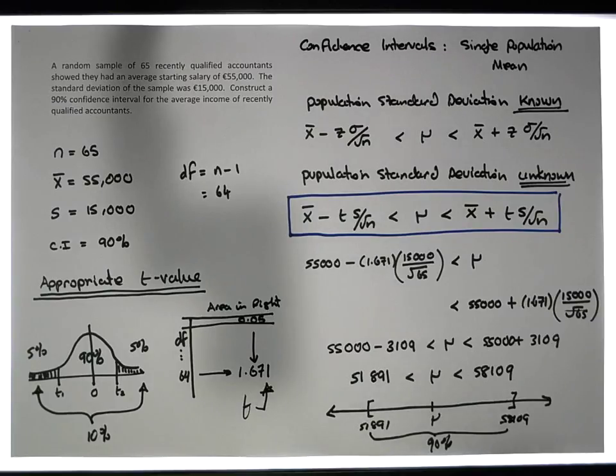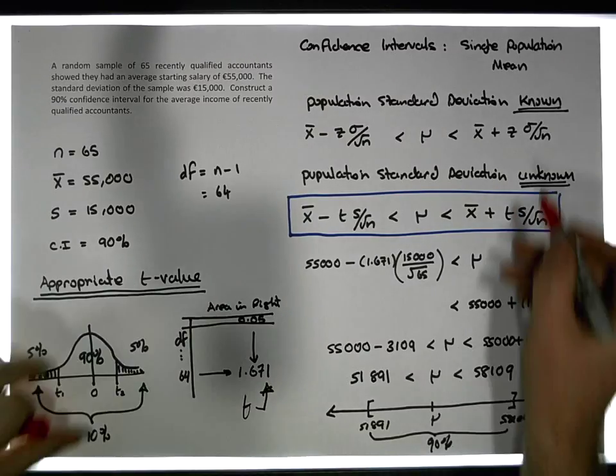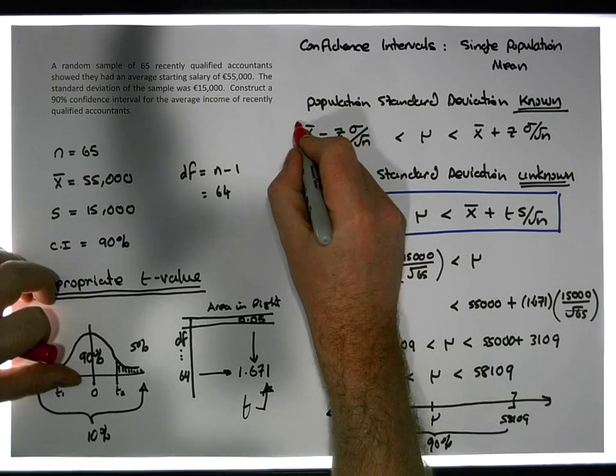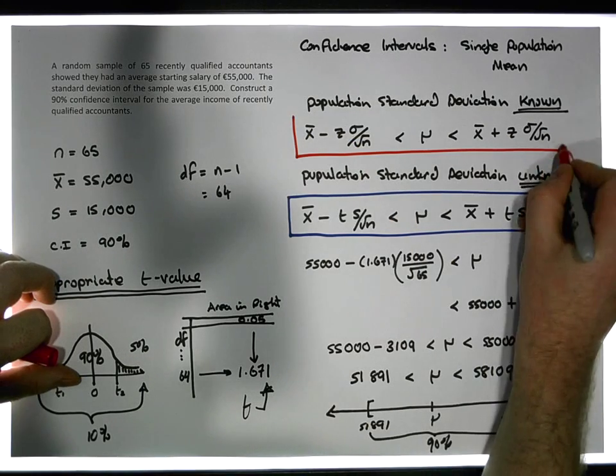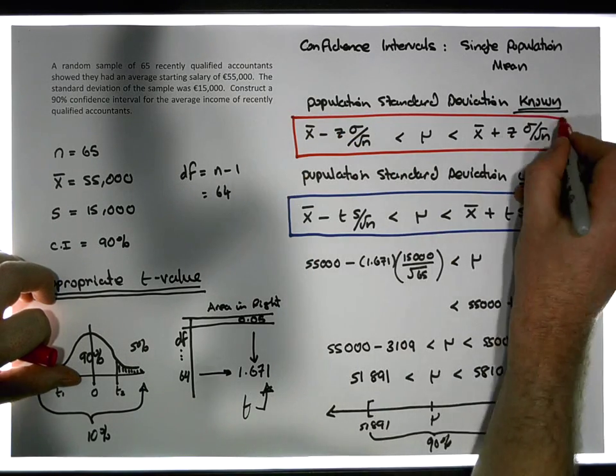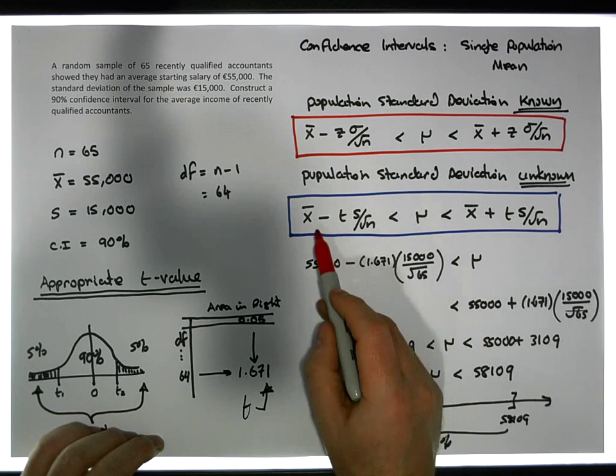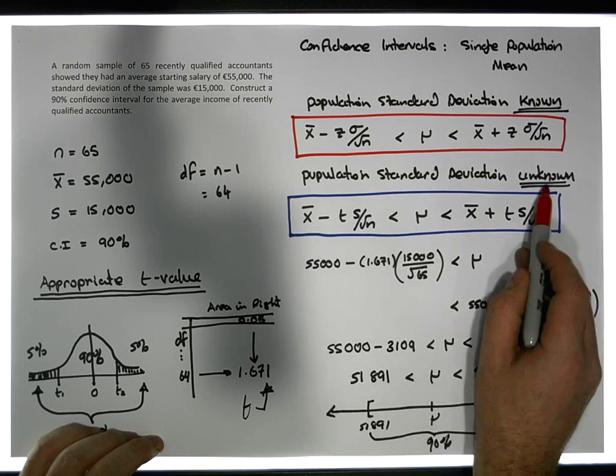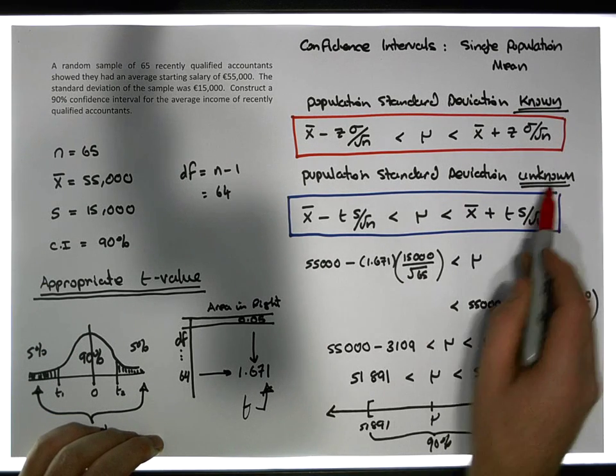That's how we calculate confidence intervals. The key thing to keep in mind is that we have two formulas: the first formula is where we know the population standard deviation, and the second formula is where we use a t-statistic because the population standard deviation is unknown and we have to rely upon the t-distribution.